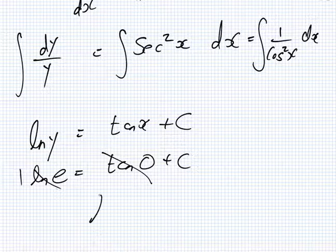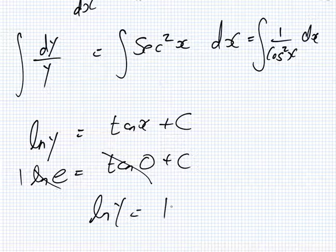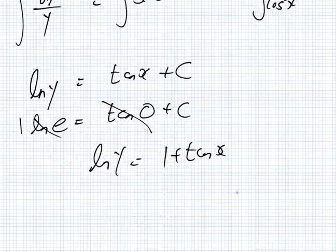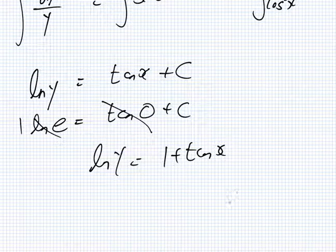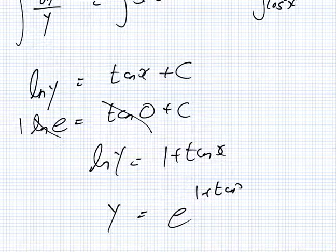So you have log y equals 1 plus tan x. How do I cancel log? e both sides. So I get y equals e^(1 plus tan x).